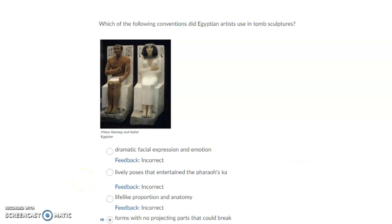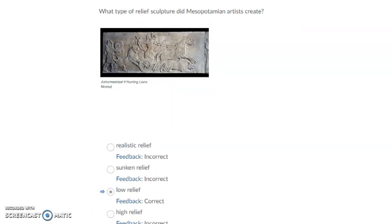Which of the following conventions did Egyptian artists use in tomb sculptures? The answer is forms with no projecting parts that could break. What types of relief sculpture did Mesopotamian artists create? The correct answer is low relief.